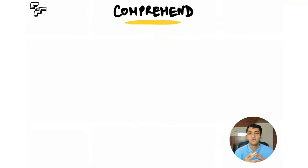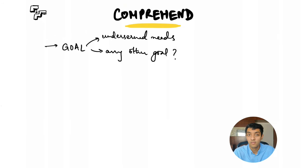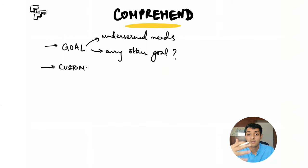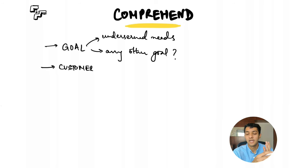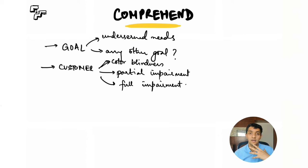In step one — comprehending the situation — there are a few areas I want clarity on. First, I want to understand the goal: why are we building this product? It could be that current ATMs don't serve visually impaired people, or there may be another goal. Second, I want clarity on the customer. I know the interviewer said 'visually impaired,' but there are different types — color blindness, partial impairment, or full impairment — and I need to know which segment to focus on.